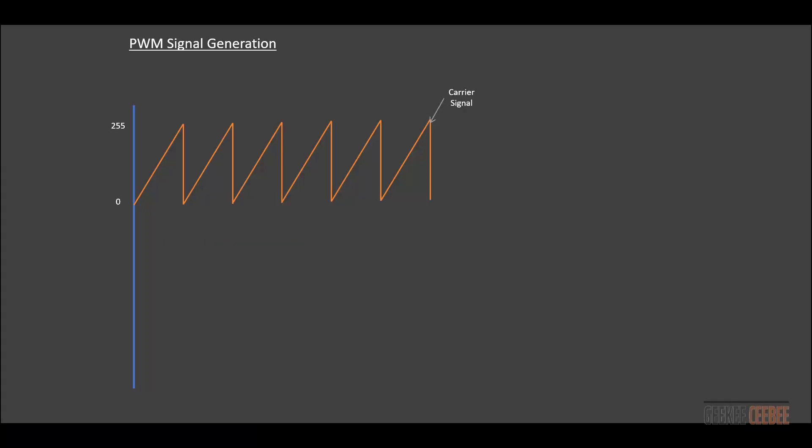You'll hear an annoying humming noise when operating a motor through a low-frequency PWM signal. Now let's take a look at how microcontrollers actually generate PWM signals. A sawtooth wave — called the carrier signal — is generated by the microcontroller. It counts from 0 to 255, then goes back to 0 and repeats. Each count corresponds to one clock cycle of the microcontroller.